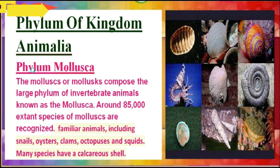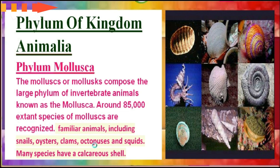First of all, what is Phylum Mollusca? Mollusca, or molluscs, compose a large phylum of invertebrates known as mollusca. Around 85,000 extinct species of mollusca are recognized. Familiar animals include snails, oysters, clams, octopus, and squid. Many species have a calcareous shell. You can see the representative members of this class here.